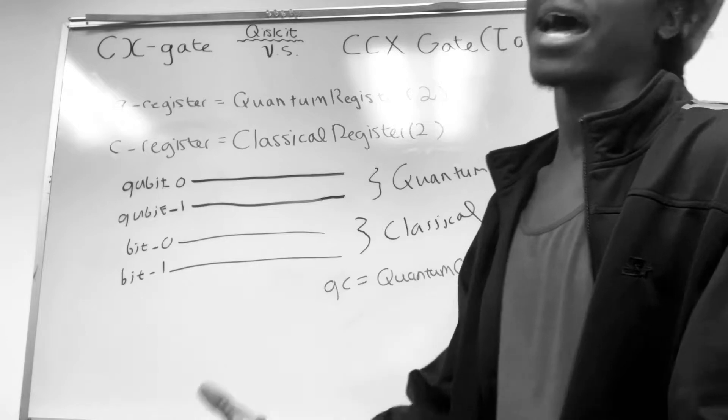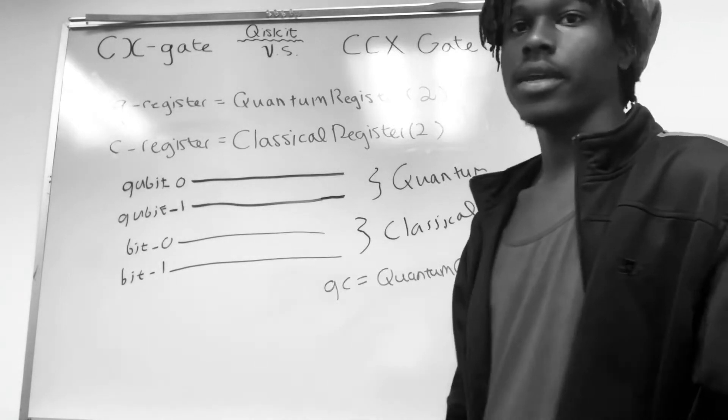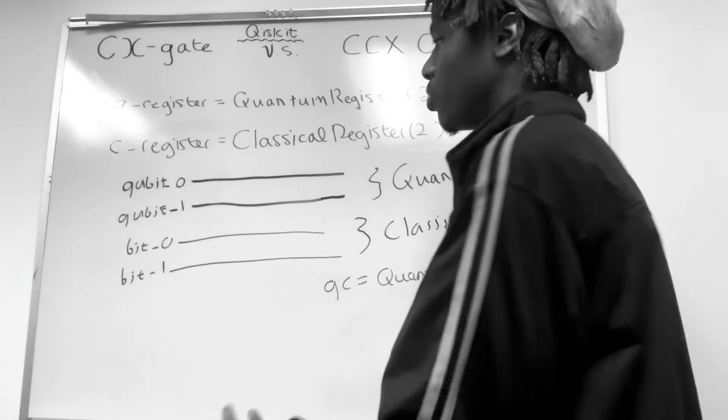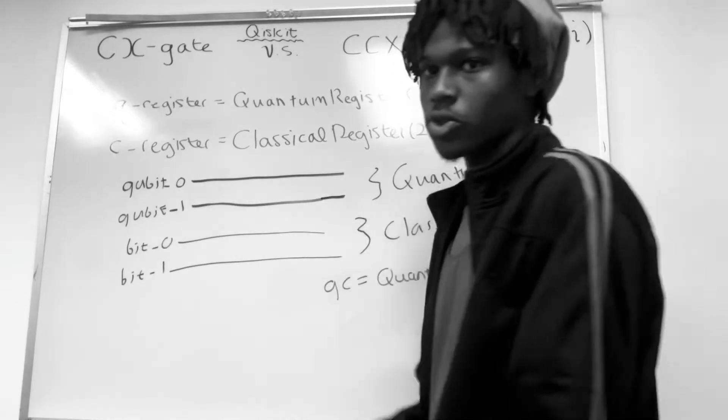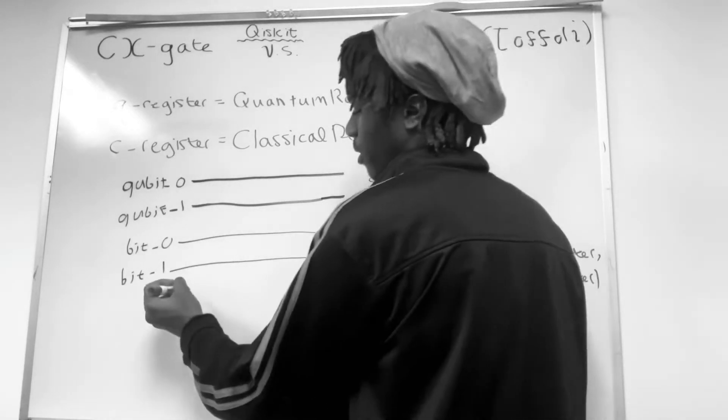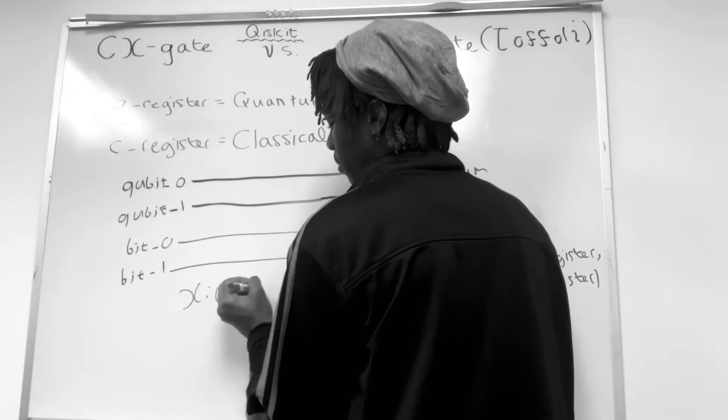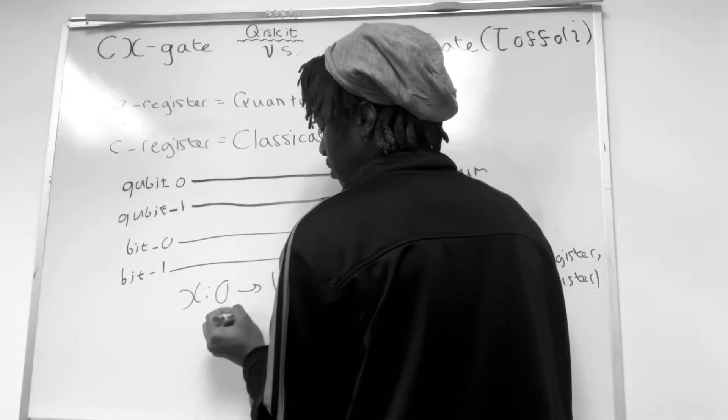So now we can understand what is happening. A regular gate, let's say an X gate, what this would do is swap this gate. So if I have a zero, it would be one. So that's what the X is going to do. Zero to one, one to zero.